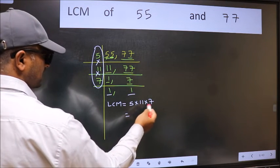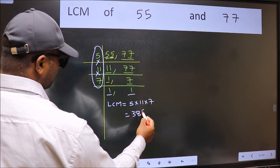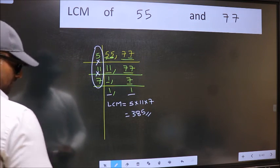When we multiply these numbers, we get 385 is our LCM. So it looks fine.